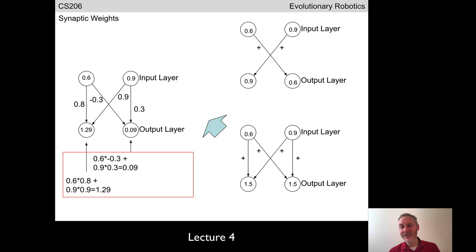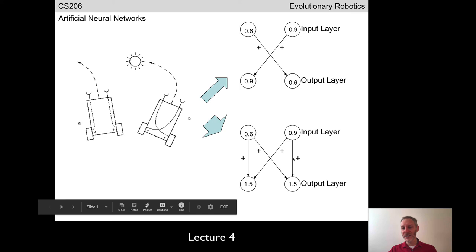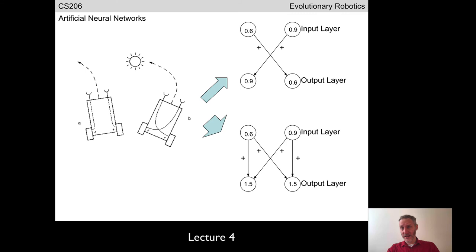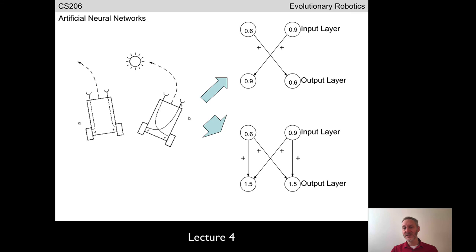Let's introduce one more detail: synaptic weights. The plus signs on synapses represent excitatory connections; in the brain there are both excitatory and inhibitory synapses. We can replace pluses with minuses for inhibitory connections. An inhibitory connection means the stronger the source neuron, the more it decreases the value at the output layer. We replace plus/minus signs with floating point values between minus 1.0 and plus 1.0.